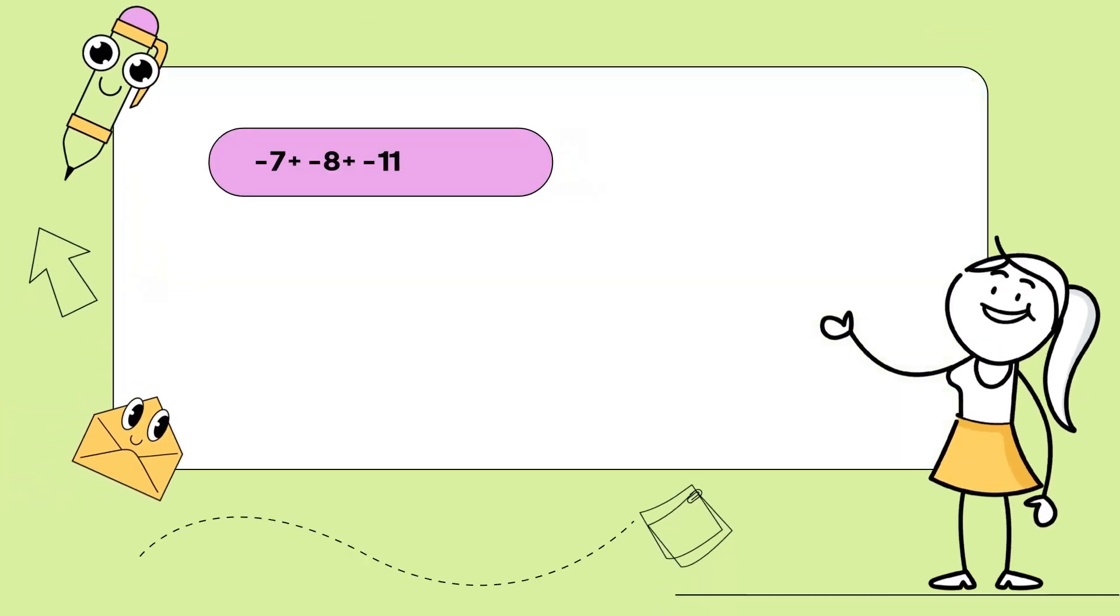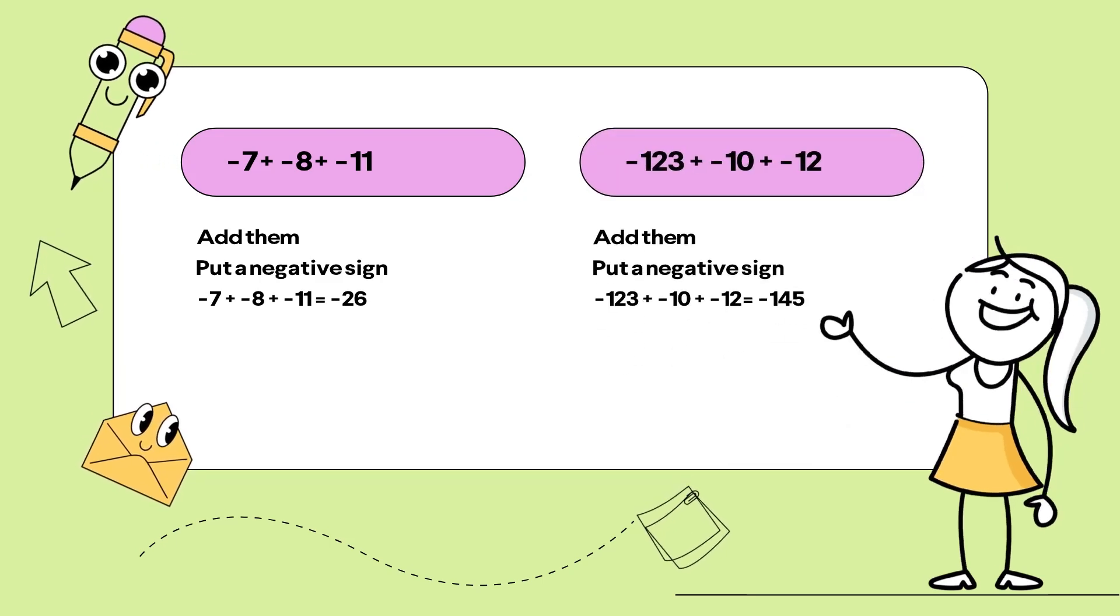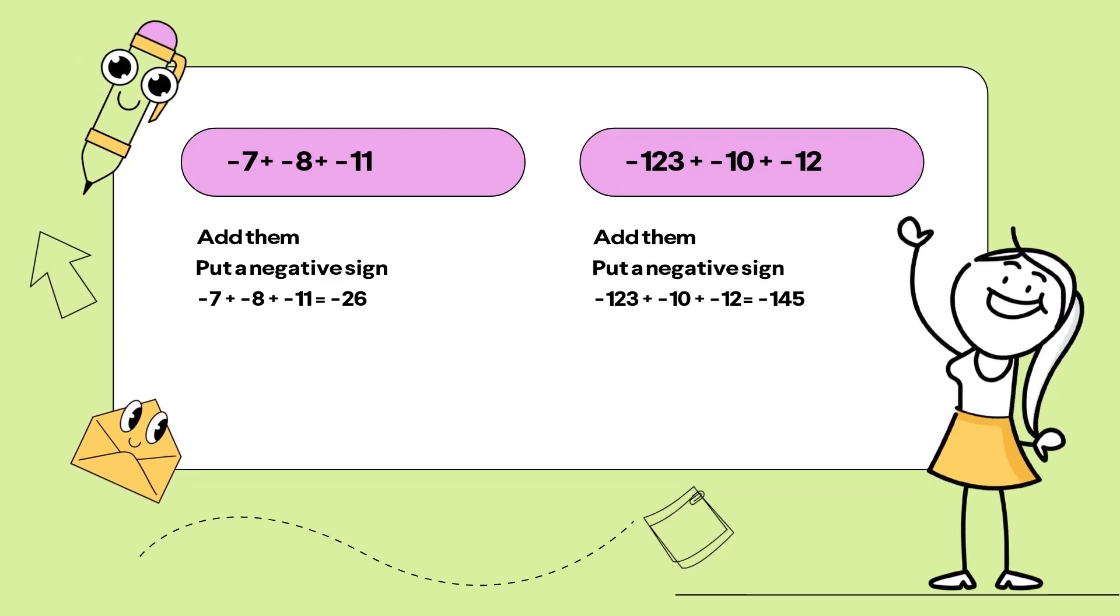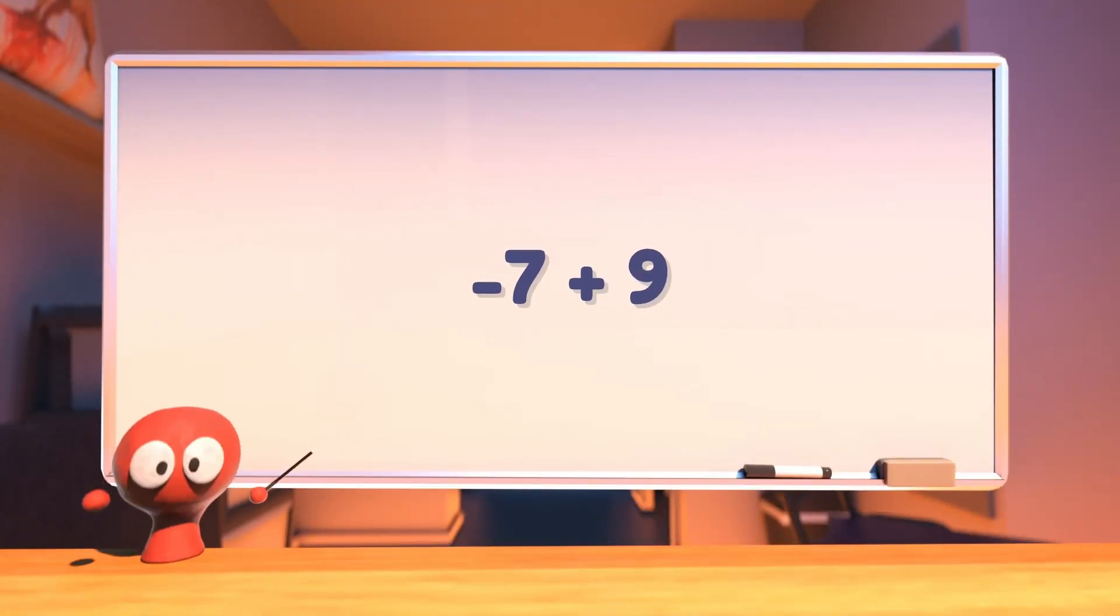So, you are telling me that I simply add the negative numbers and put a negative sign? That is cool. Negative 7 add 9 will give me 2. One number is negative and the other positive. We take away and put the sign of the bigger number, 9.